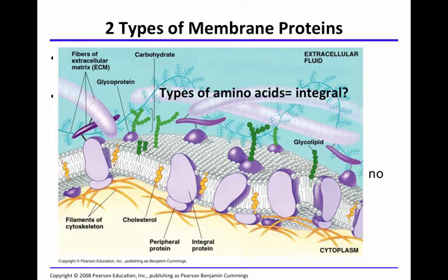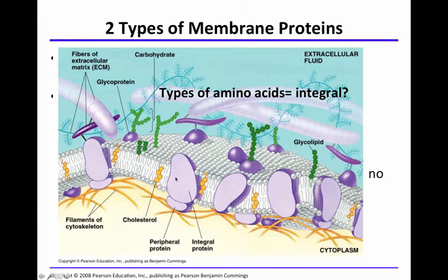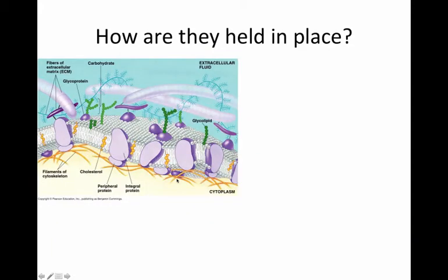Now, what type of amino acids would have to exist in the hydrophobic core? I want you to begin to think about how we build upon knowledge from previous chapters. What type of amino acid has to be in these integral proteins? Because they reside in this hydrophobic core, they have to be a specific type — nonpolar amino acids — to exist there.